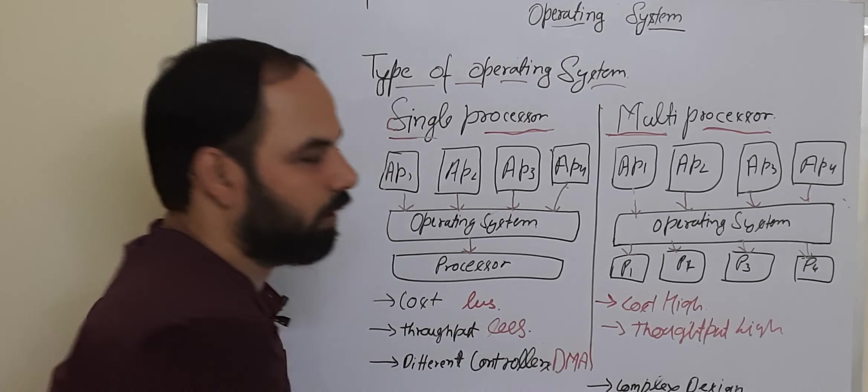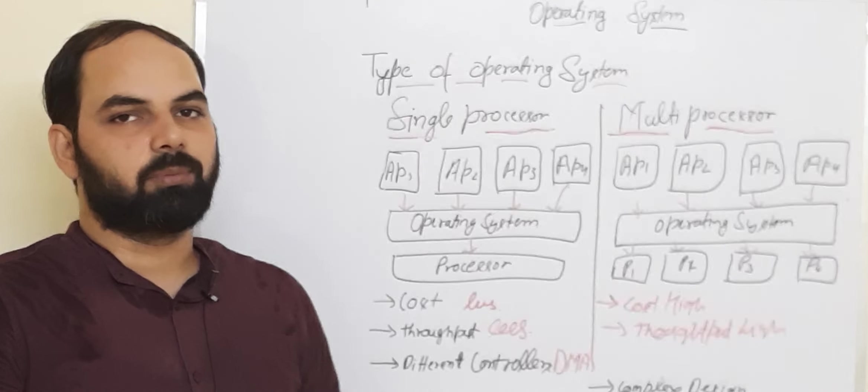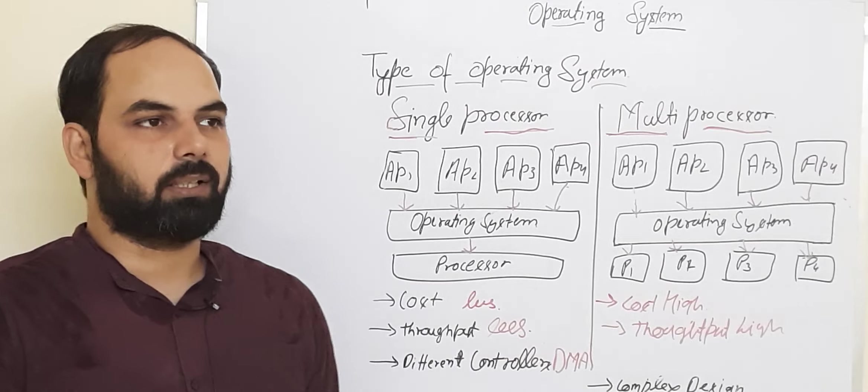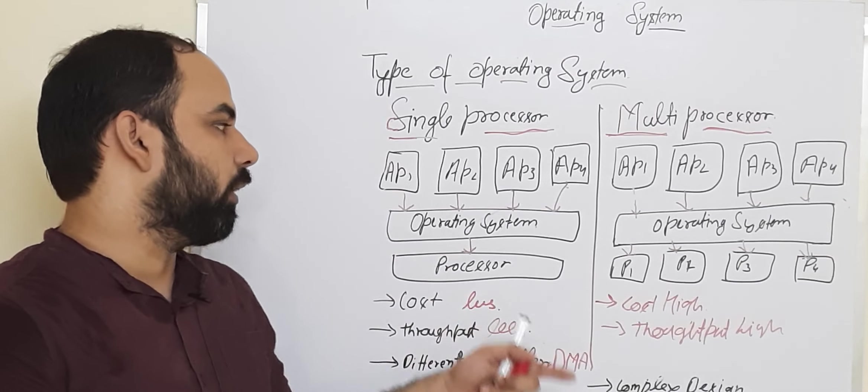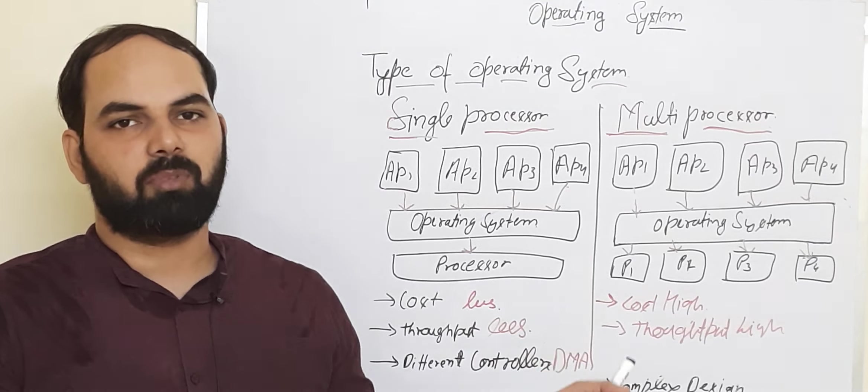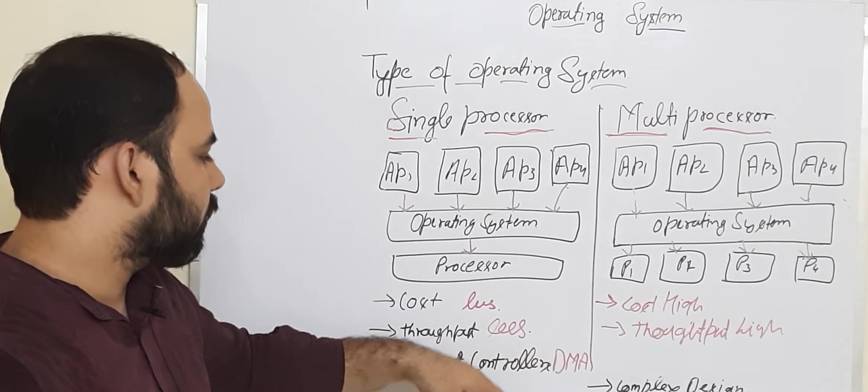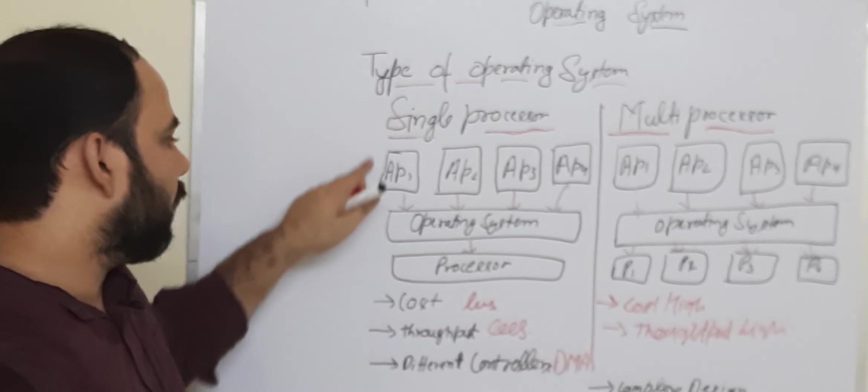When you have to access a large amount of data, in that case, we have to access direct memory. We don't have to access the processor. Like movie or something, file transfer, then we have to access the memory directly. This is DMA type, in single processor.